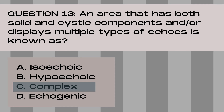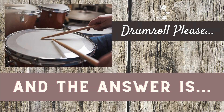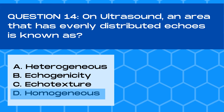Question 14. On ultrasound, an area that has evenly distributed echoes is known as: A. Heterogeneous, B. Echogenicity, C. Echotexture, or D. Homogenous. And the answer is D. Homogenous. On ultrasound, the echo texture of an area, or the pattern of the echoes, is determined by looking at how evenly distributed the echoes within the mass are. A mass that has echogenicities that are all the same color inside, also known as evenly distributed echoes, is called homogenous.